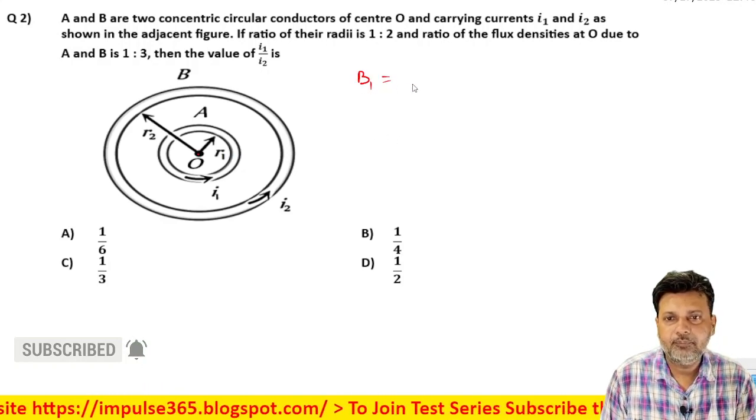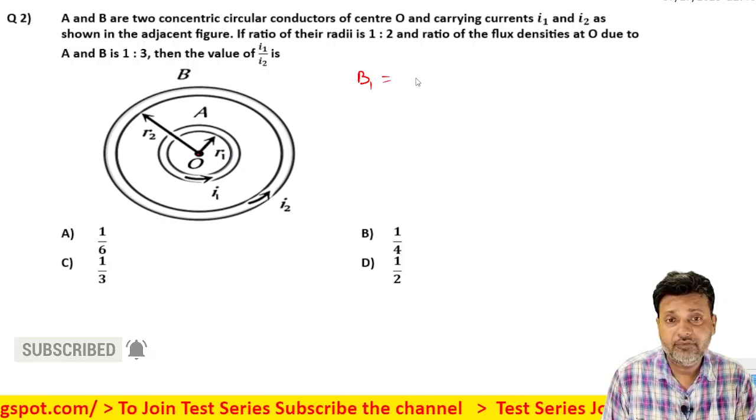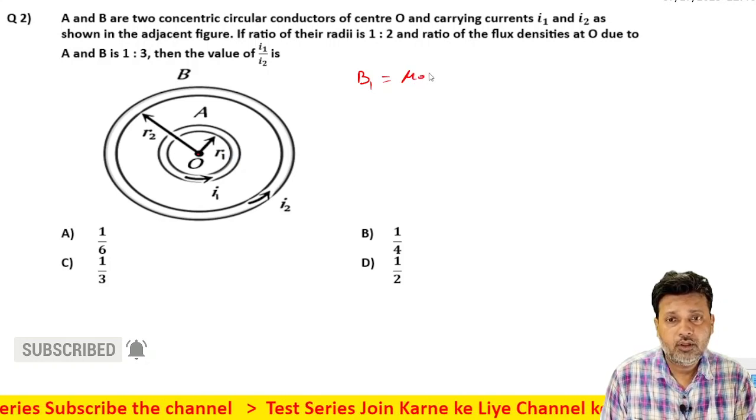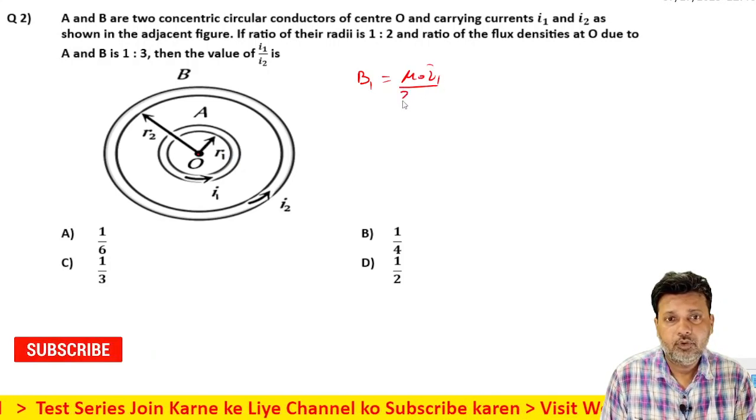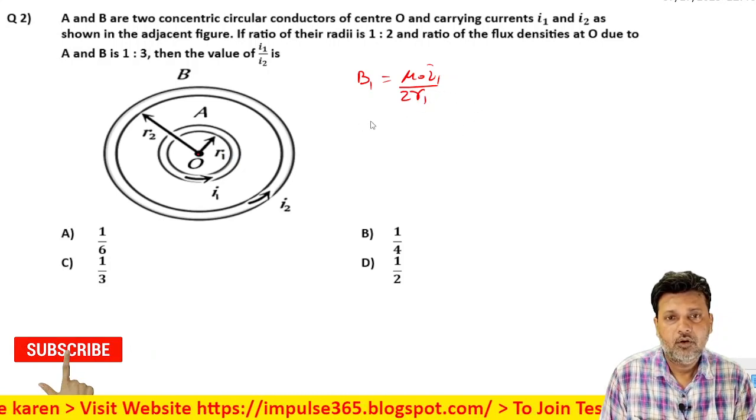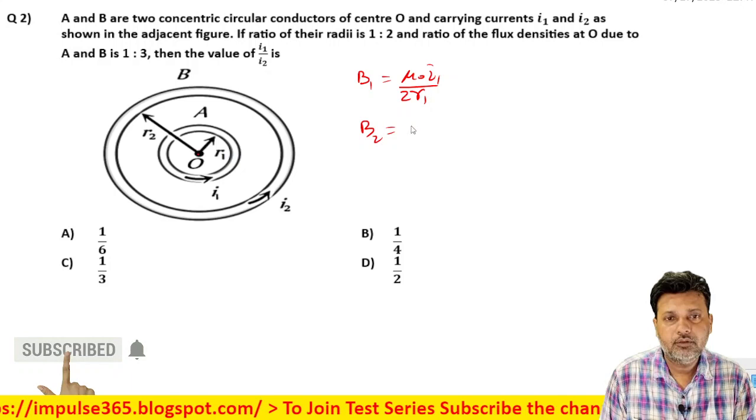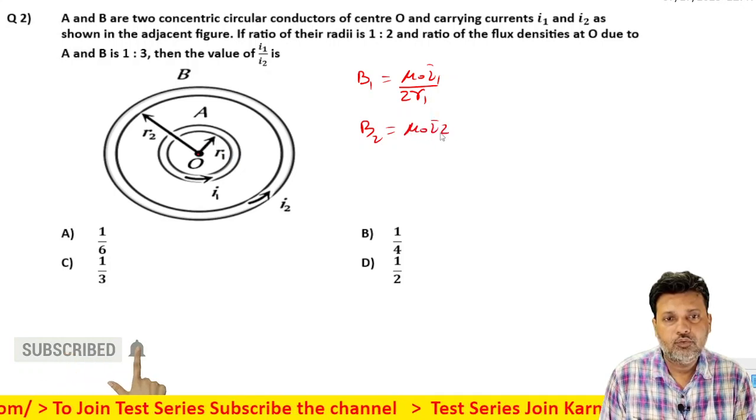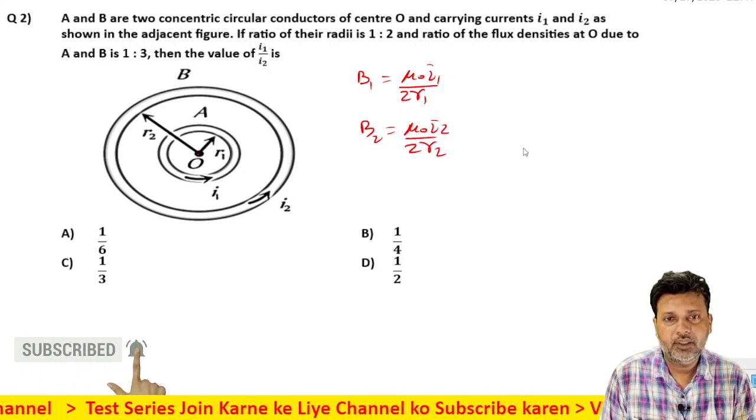Pehle wali value - pehle wire, pehle circular coil ki wajah se, A ki wajah se kitni hogi? Mu not i1 upon 2 r1, correct hai. Aur B2 ki value kitni hogi? Mu not i2 upon 2 r2. Yah hota hai.